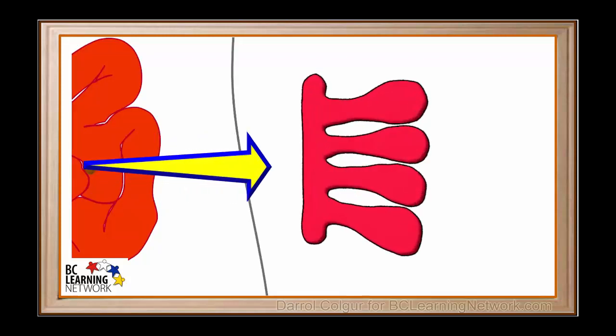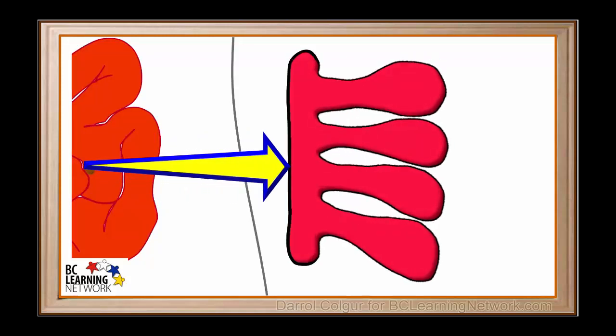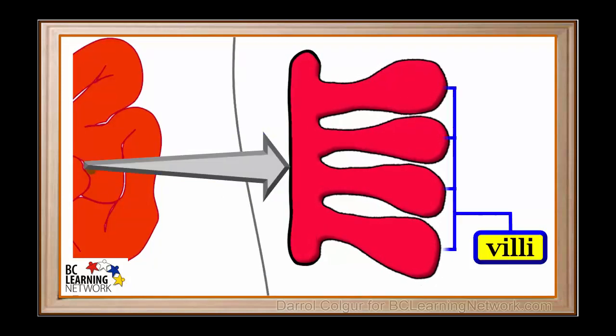Now we'll take a closer look at what is happening on the inside wall of the intestine. As we zoom into the wall, we see it has finger-like projections on it. These projections on the inside surface of the intestine are called villi. They are present throughout the whole small intestine. Having all these folds greatly increases the inner surface area of the intestine. Because nutrients are absorbed through this surface, the villi enhance our ability to absorb nutrients.